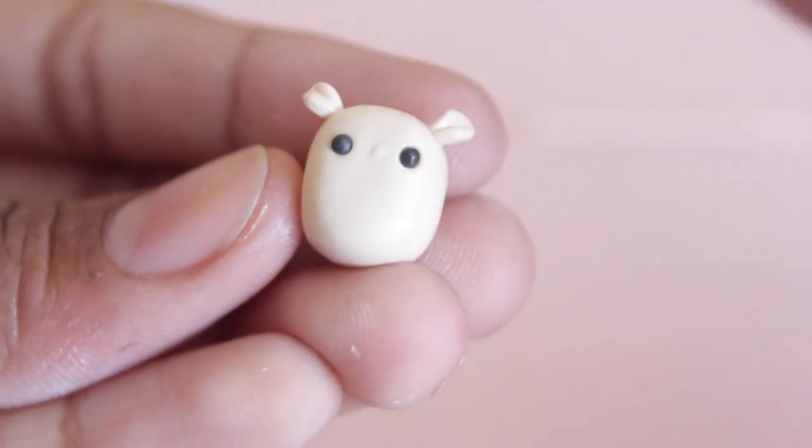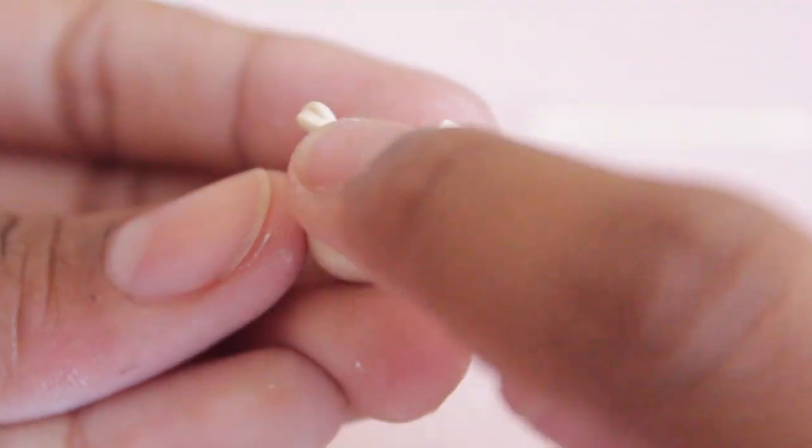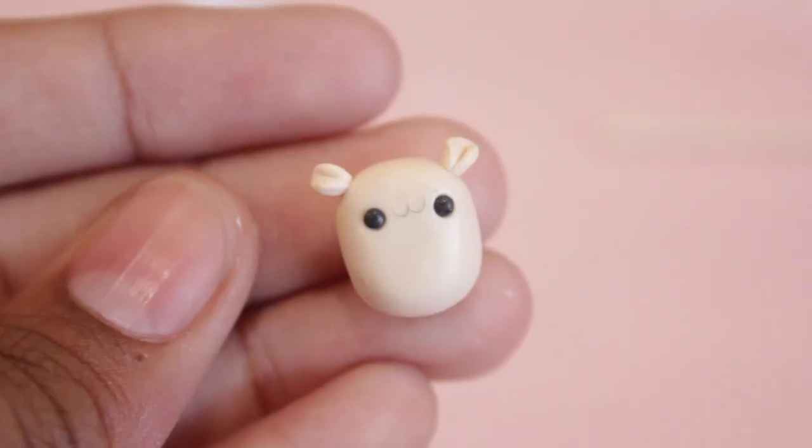For the mouth, I took some liquid clay and also a really thin piece of black clay and shaped that to form a W.